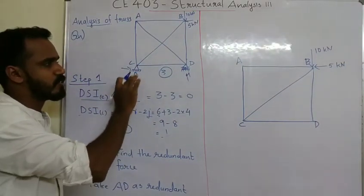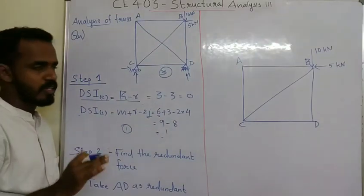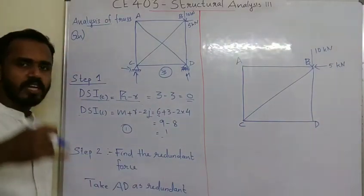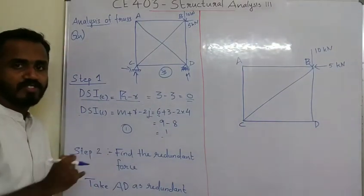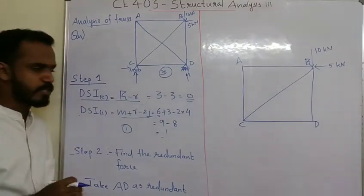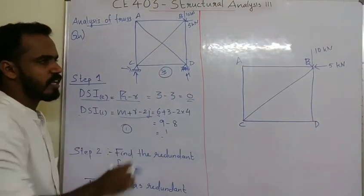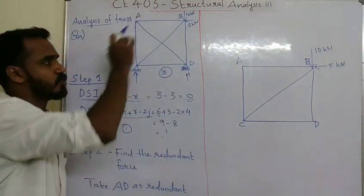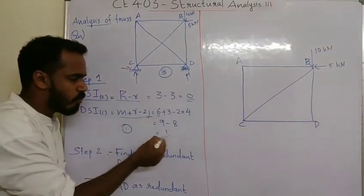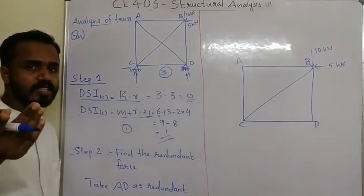The internal indeterminacy is equal to 3 minus 3, which equals 0. The external indeterminacy is calculated as the number of members (1 through 6) plus 3, minus 2 times the number of joints (4 joints), giving us 6 plus 3 minus 8 equals 1. So the internal degree of statical indeterminacy is equal to 1, and the total indeterminacy is equal to 1.